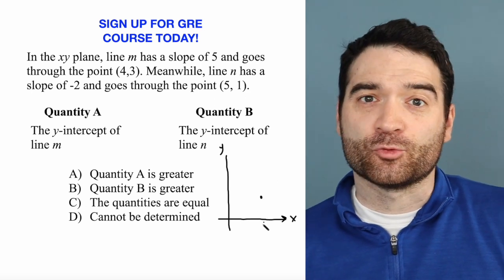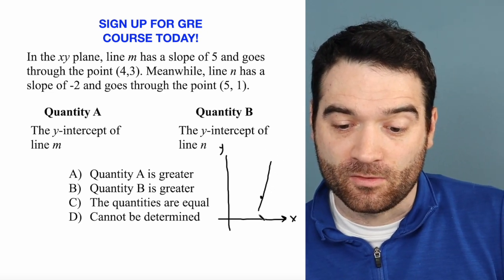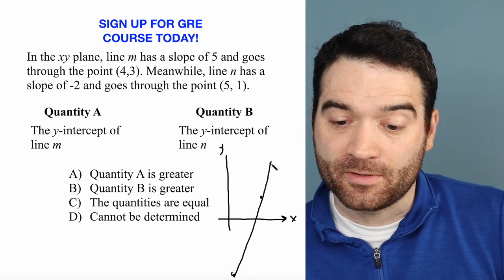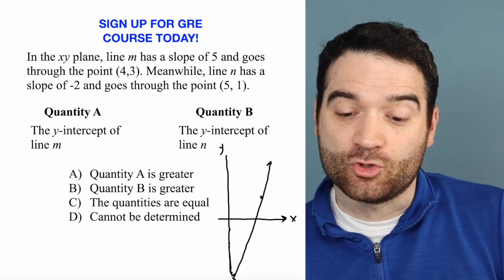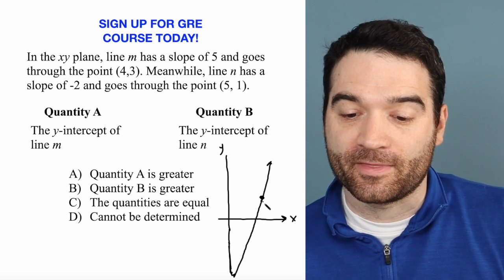And a slope of 5 is a really steep positive slope. Now, it's important that you know all of the rules about the XY coordinate plane. I'm not going to cover all of them right now, but you should be able to sketch a line like this. Slope of 5 goes through the point (4, 3) right there.